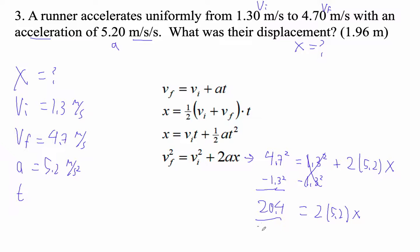The next thing I'm going to do is I'm going to divide by 2 and 5.2. When I do that, this goes away, and I'll get x. So 20 divided by 2, divided by 5.2 is 1.96.